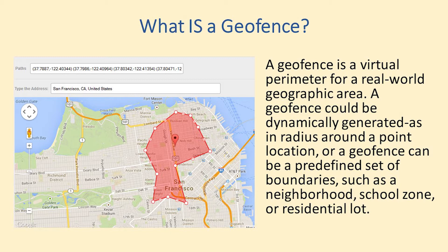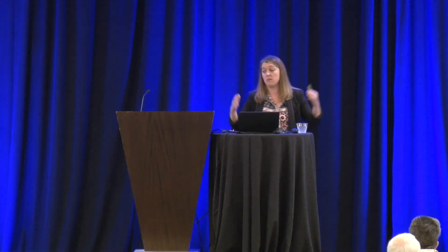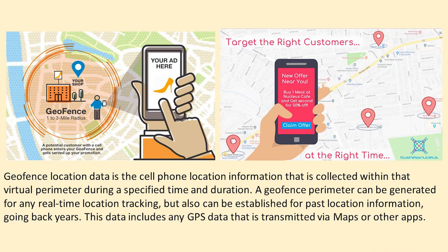A geofence could be dynamically generated as a radius around a certain point or an actual fence with predefined boundaries. For example, a geofence could start with me here on stage and go out 150 meters, 360 degrees, or someone could define a geofence of this particular room or the block this building is on. It can encompass pretty much anywhere virtually, and it includes all of the data within it — collected within that virtual perimeter for a specified time and duration.